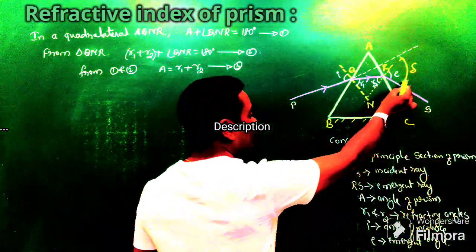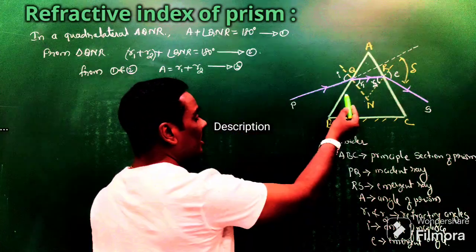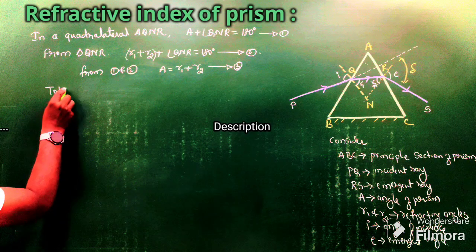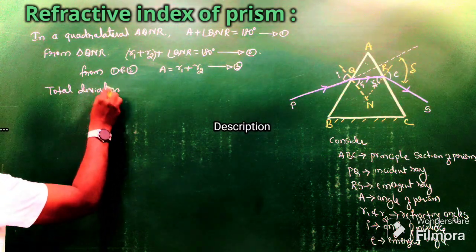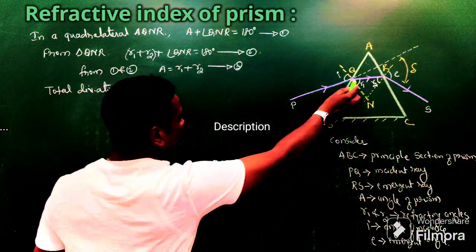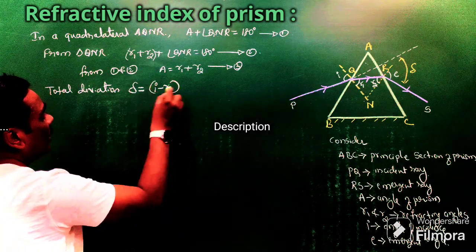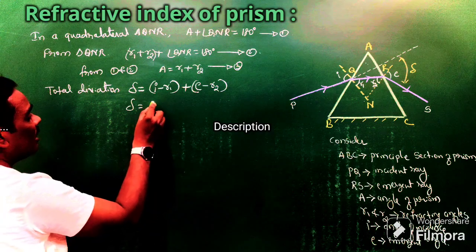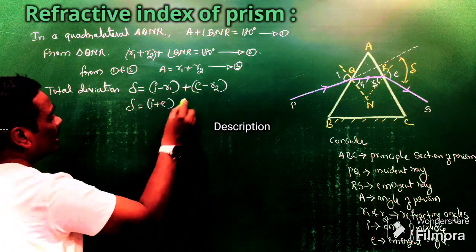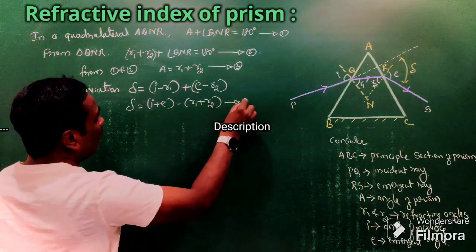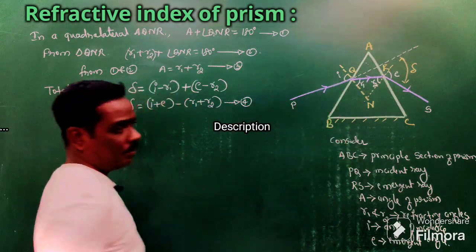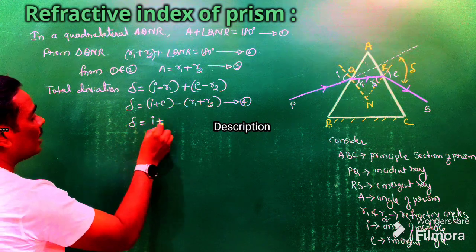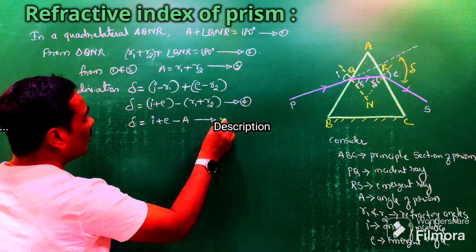Next, we find the total deviation produced by the prism. The total deviation delta is the deviation produced at the first surface plus the deviation produced at the second surface. Deviation at the first surface is (i − r1) and at the second surface is (e − r2). So delta equals i plus e minus (r1 plus r2), which is equation number four. Substituting r1 plus r2 equals A from equation three, we get delta equals i plus e minus A. This is equation number five.